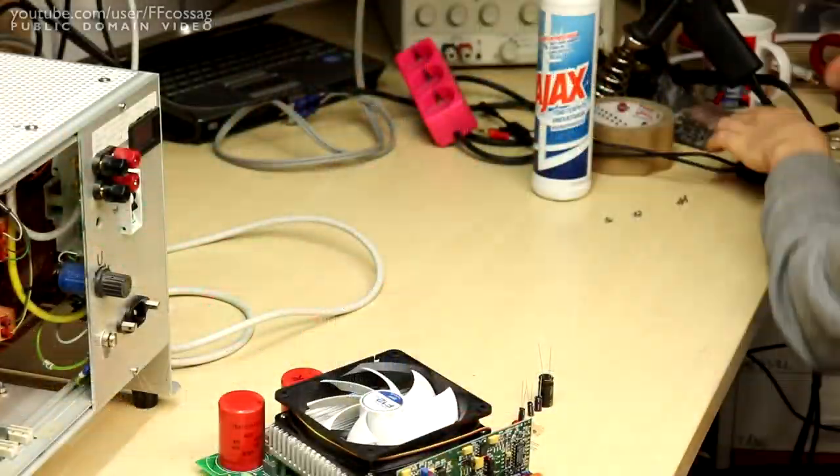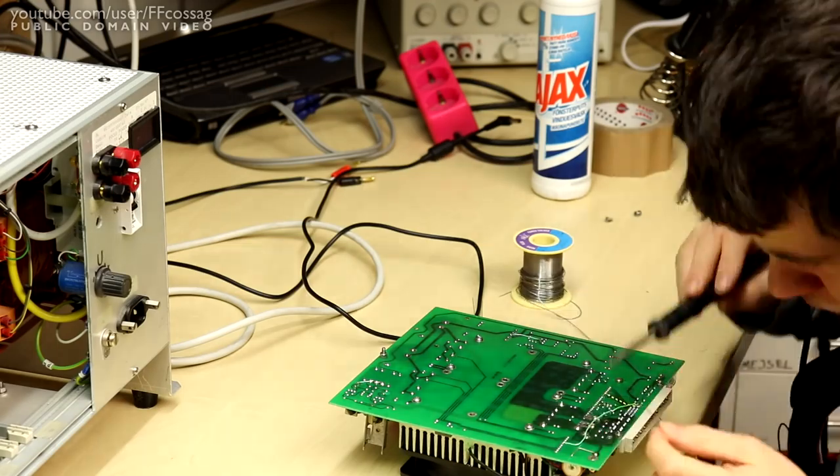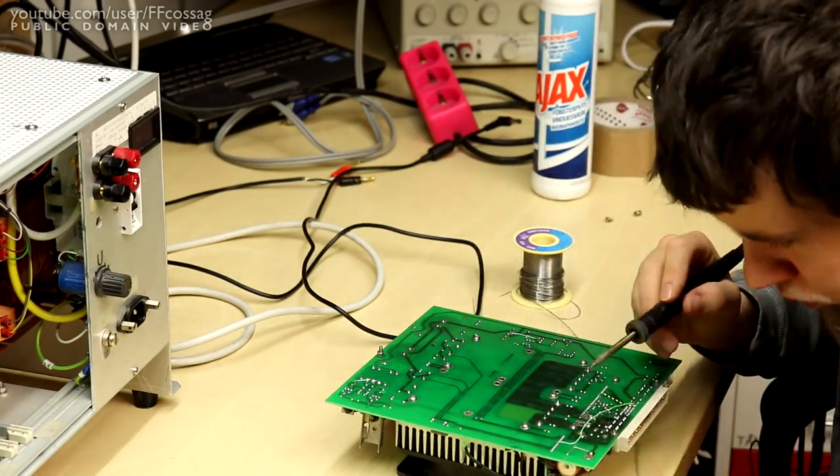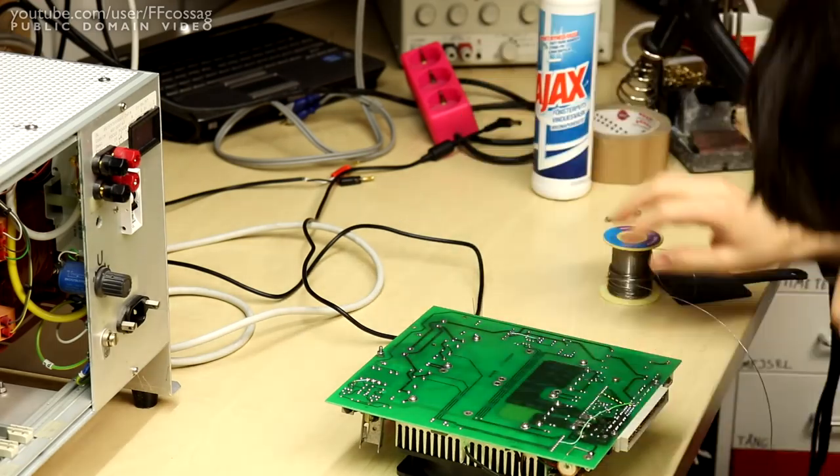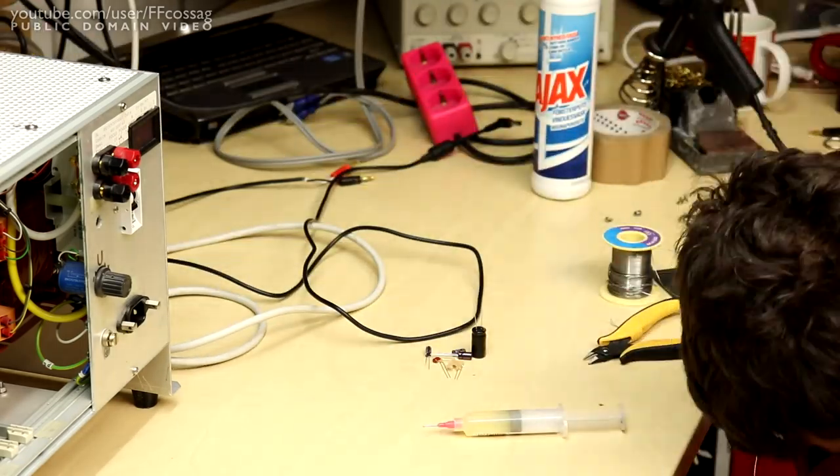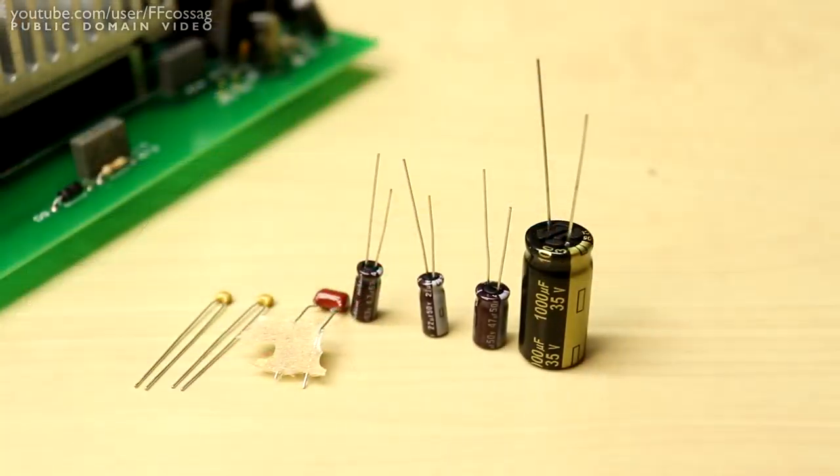And the best data sheet I've found doesn't even specify the internal resistance nor the ripple current capability. So, we do have every reason to suspect that these might not be able to quite quench the high current spikes which are put out by this switch mode power supply.